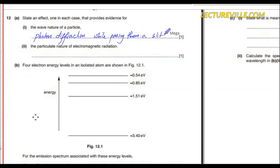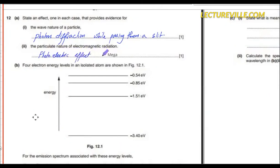Diffraction: if light is a particle, then the particle should not deflect. For the particle nature of electromagnetic radiation, the photoelectric effect happening at a certain frequency, or line spectrum absorption, provides evidence.